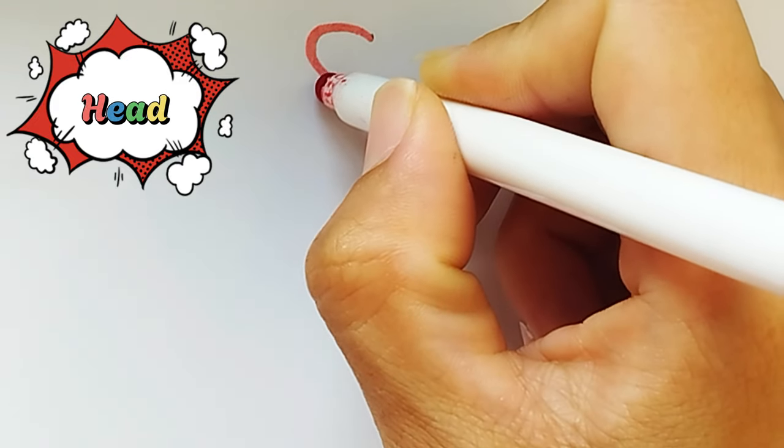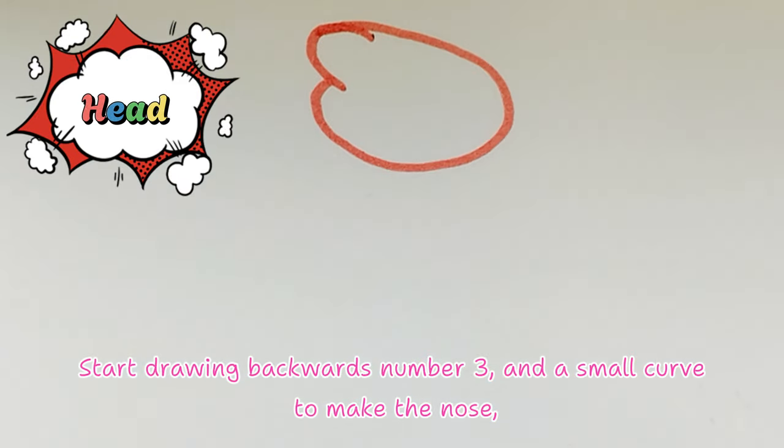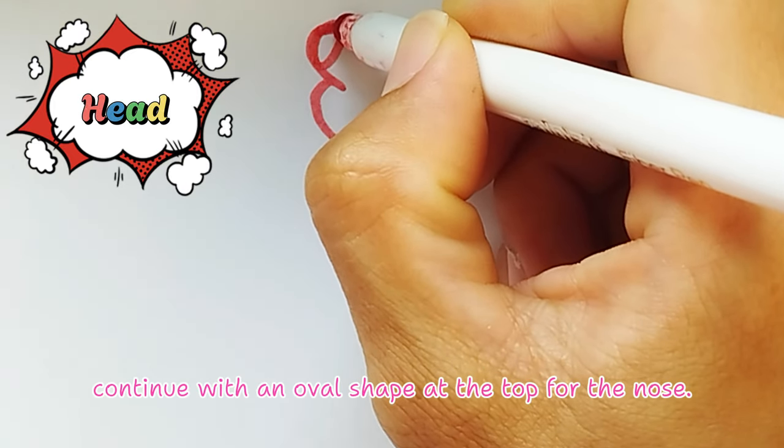Head. Start drawing a backwards number 3 and a small curve to make the nose. Continue with an oval shape at the top for the nose.